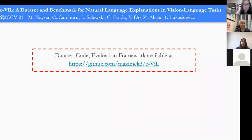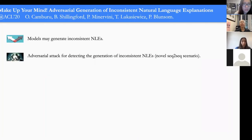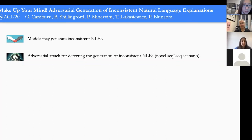The E-SNLI-VE dataset, code, and evaluation framework are publicly available on GitHub for uniform benchmarking of new models. The third and final work shows that these models, while promising, can generate inconsistent natural language explanations. We present a first adversarial attack for detecting inconsistent explanation generation, which is also a novel scenario in sequence-to-sequence models generally.